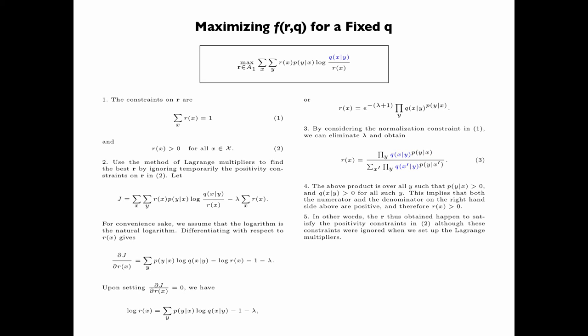In other words, the R thus obtained happened to satisfy the positivity constraints in equation 2, although these constraints were ignored when we set up the Lagrange multipliers.